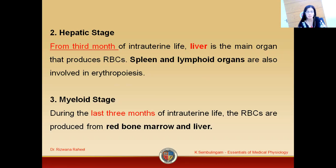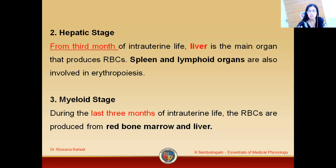The third stage is the myeloid stage. This is the stage during the last three months of intrauterine life. The RBCs are produced by the red bone marrow and the liver. So this was all about the stages involved in erythropoiesis in infants.